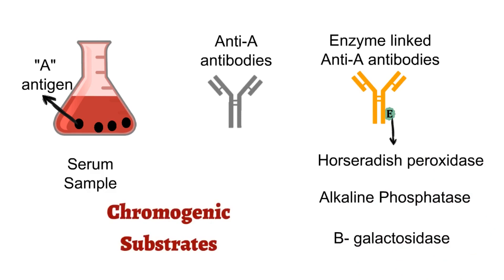Substrates of these enzymes are chromogenic in nature, meaning the substrate is converted into a colored product by the action of the enzyme. For example, horseradish peroxidase converts TMB substrate into a blue colored product.